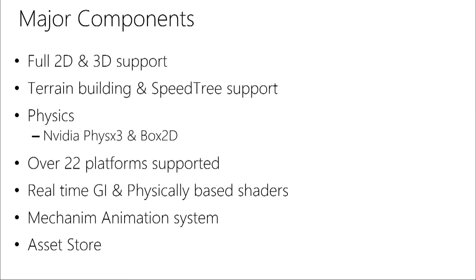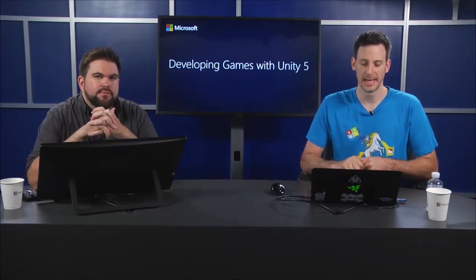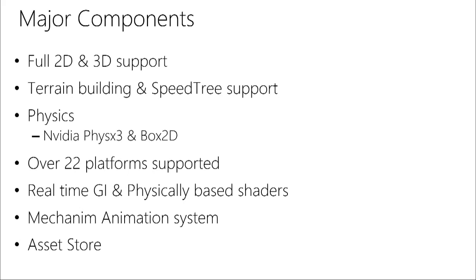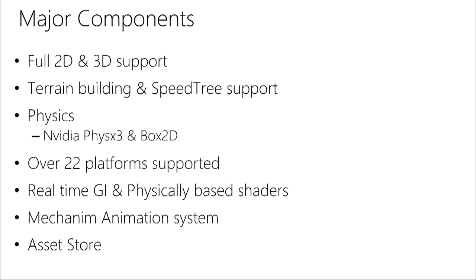Unity gives you full 2D and 3D support. It's not a 3D asset modeling tool — you typically use external tools — though you can do terrain building inside Unity, and as of Unity 5 they introduced Speedtree, used in movies and top-end games. Third-party plugins like ProBuilder let you do modeling inside Unity as well. Physics uses Box2D for 2D and NVIDIA physics for 3D. Unity 5 upgraded to NVIDIA physics 3, giving a lot more performance — demos show 200 physics objects vs. 20-30 in Unity 4. Over 22 platforms are supported, with real-time global illumination and physically-based shaders.